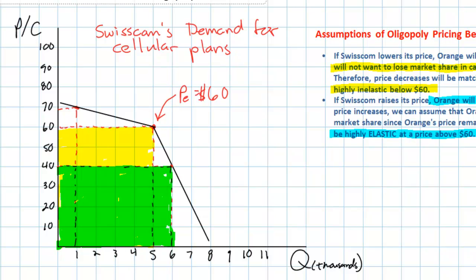Could Swisscom benefit by raising its price? Clearly not. An increase in price from $60 to $70 would once again cause total revenues to fall — the blue rectangle represents Swisscom's total revenues at $70. Swisscom's total revenues decrease if it raises its price, and decrease if it lowers its price. What we see, therefore, is that there is a tendency for the price in an oligopolistic market to be very sticky — to remain steady at the equilibrium level. Oligopolists have no strong incentive to raise or lower their prices, giving us a kinked demand curve that is highly inelastic below and highly elastic above the equilibrium price.